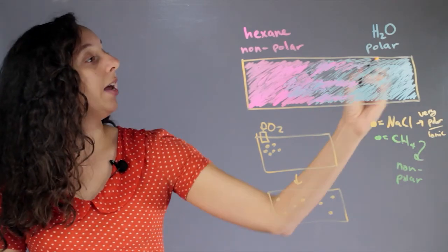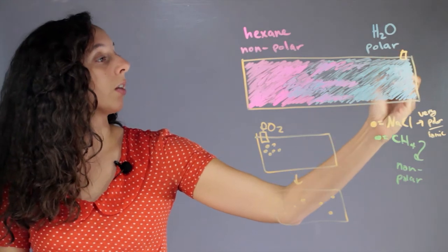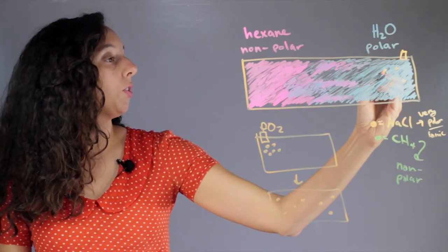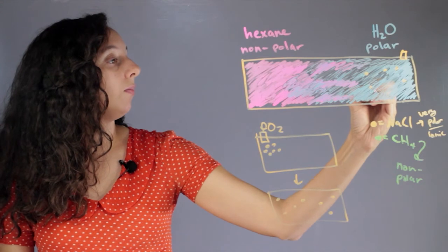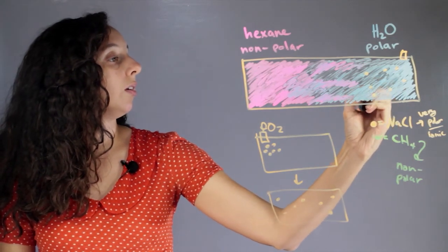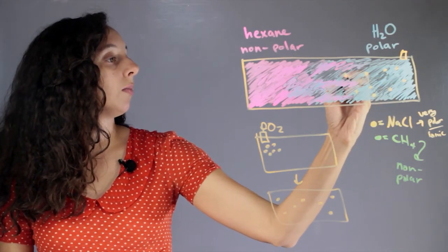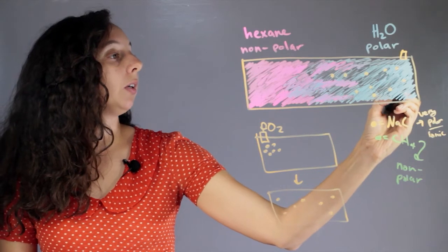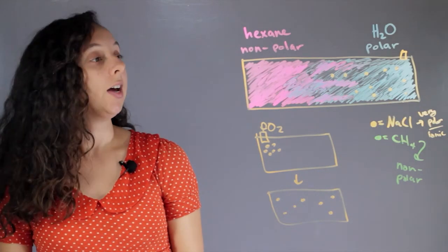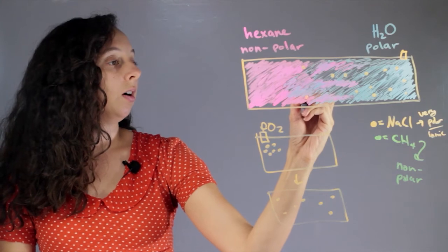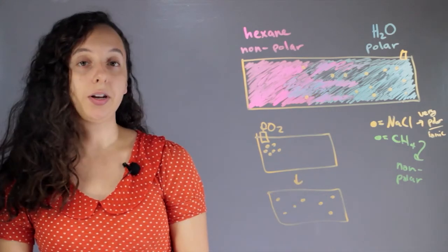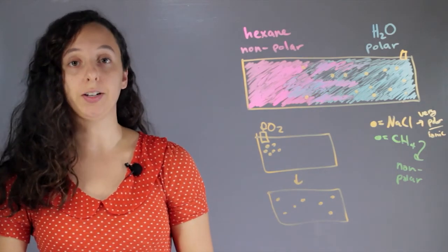So, if we entered it in here, it would disperse throughout the water, just like it would disperse regularly, but it would really avoid that hexane. And so, maybe you'd get like one or two salt molecules in the hexane, but not very many. So, it really would affect diffusion.